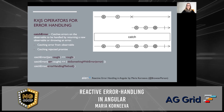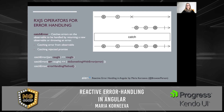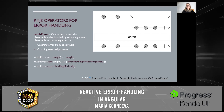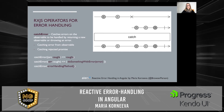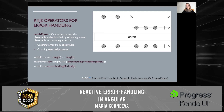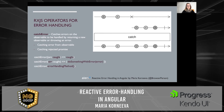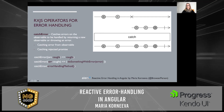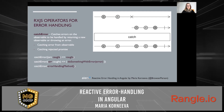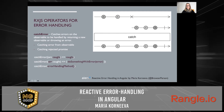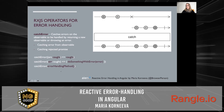Let's have a look at the syntax. catchError expects a function as a parameter, and this function itself takes two parameters: error and source observable. It returns the so-called operator function, which is either the source observable or any replacement for it — for example, an observable with default values. So what you can do is return the source observable and re-subscribe to it, implementing basic retry functionality. You could also return the error and pass it to some error handling method, or you can delegate the whole error handling to some other service method.